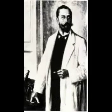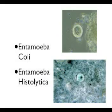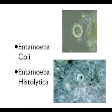The first proven case of amoebic dysentery was made in 1875 by Fedor Loesch in St. Petersburg, Russia, where he originally called it amoeba coli. This organism was later renamed Entamoeba histolytica by Fritz Schaudin, a German zoologist, in 1903. Schaudin was the first to differentiate between Entamoeba histolytica and its harmless counterpart, Entamoeba coli.